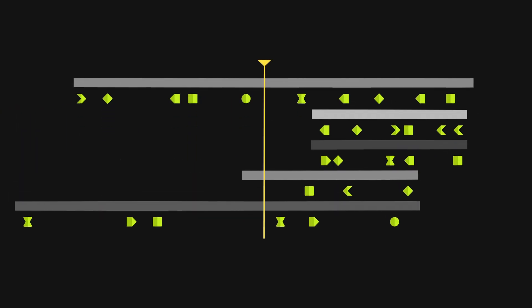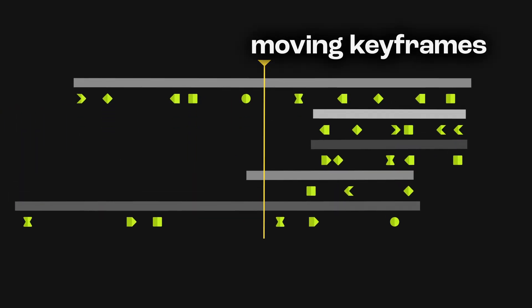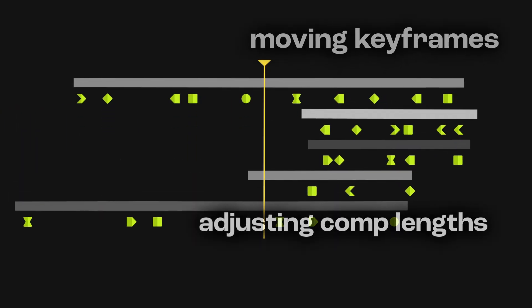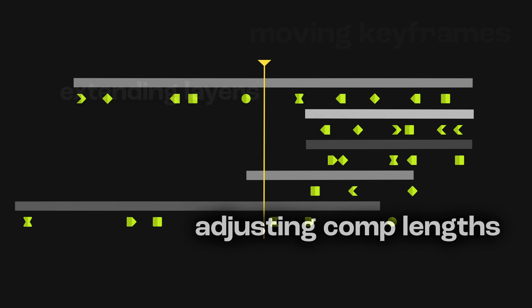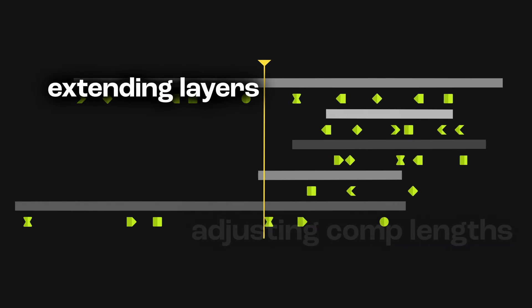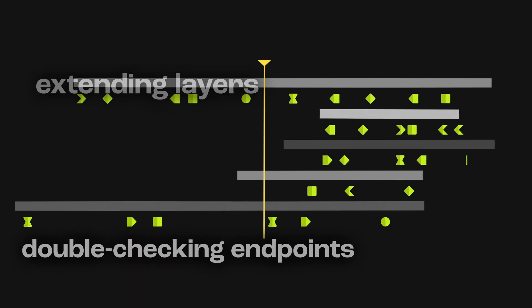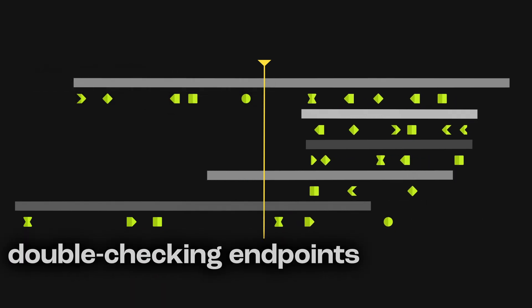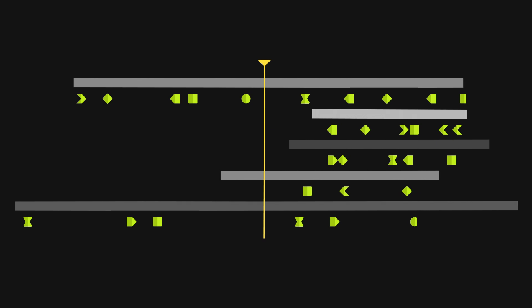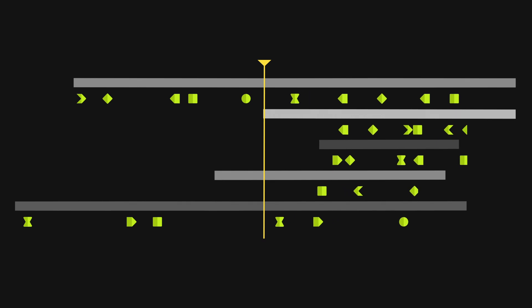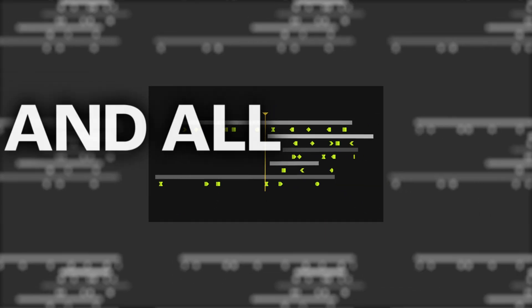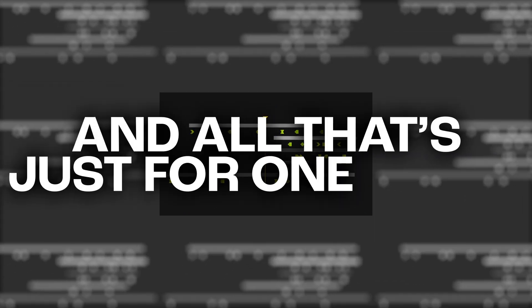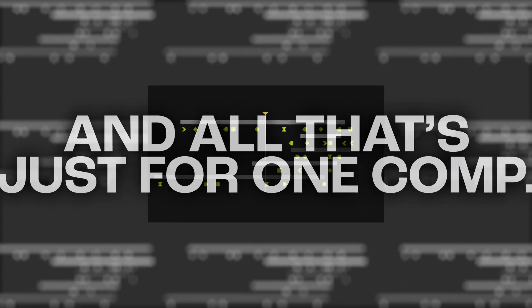You've seen this note a billion times. Adding time means moving keyframes, adjusting comp lengths, extending layers, double-checking endpoints — all just to ensure that nothing breaks the next time you click export. And all that's just for one comp.